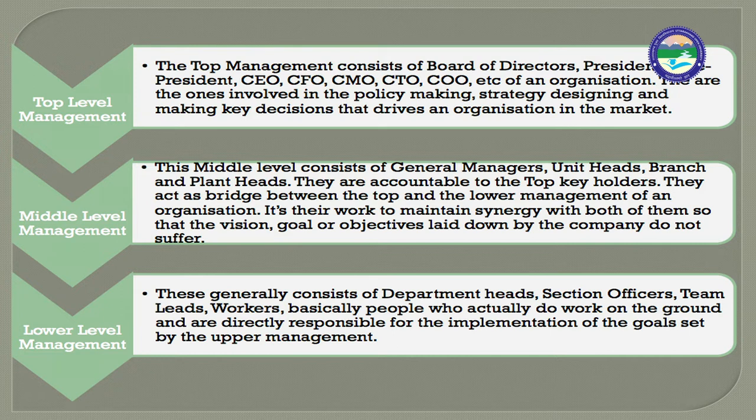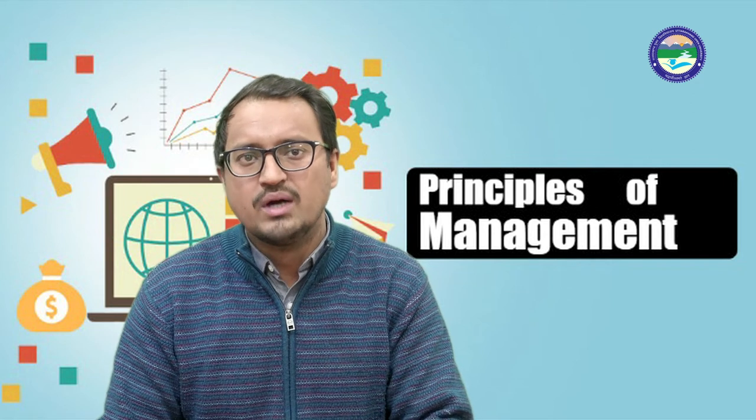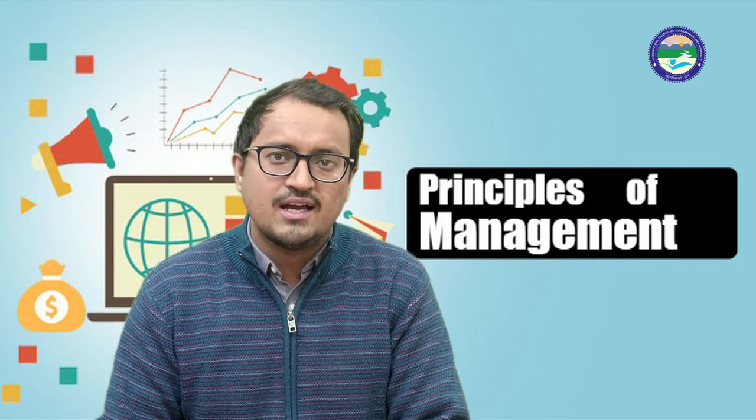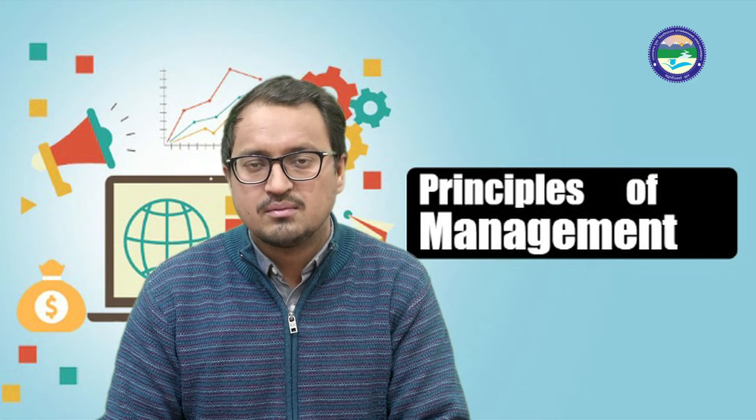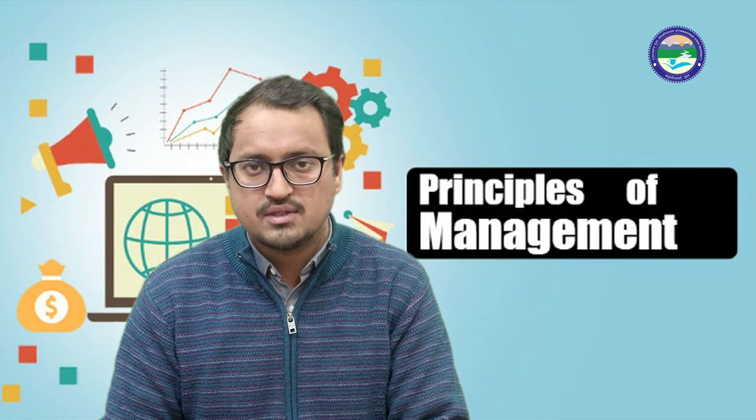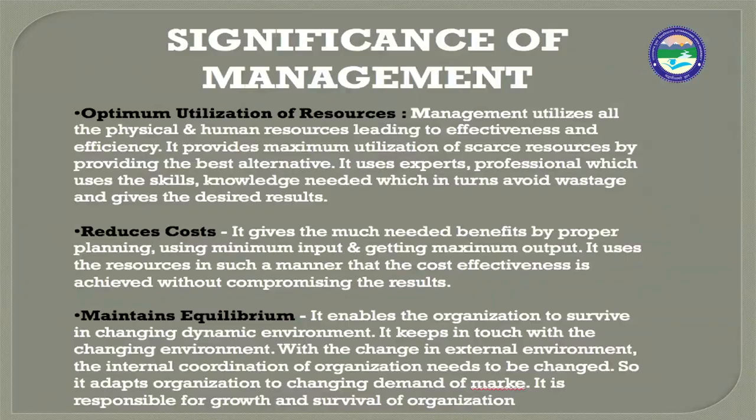The lower level of management comprises department heads, section officers, team leads, and workers — basically people who actually do work on the ground and are directly responsible for the implementation of the goals set by the upper and middle management.